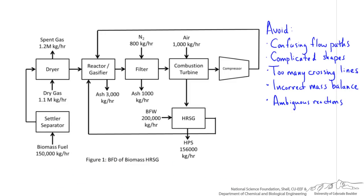Something I noticed about this process is that there are some confusing intermediate streams. What is coming out of this combustion turbine and into the compressor? What is getting recycled to this gasifier? What is going into the steam generator? And is it steam or something else that's being recycled back to the first reactor? These questions illustrate the importance of labeling intermediate streams with a description of the components going through. Flow rates are not absolutely necessary — it's just important to avoid ambiguity and provide a little more detail in some cases.